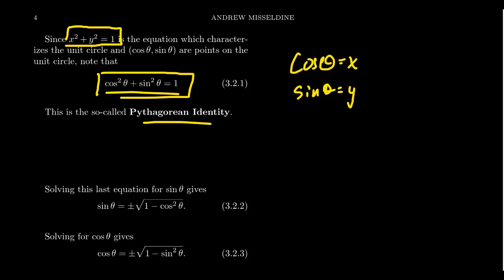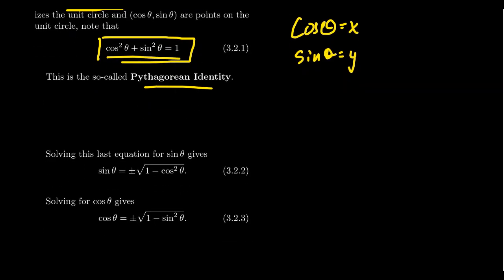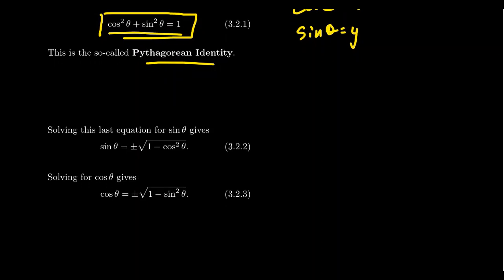Basically all the other trigonometric identities are essentially a child of this identity in some shape, way, or form. Every other trigonometric identity can essentially be derived from the Pythagorean identity. I want to show you a few others. These are also commonly referred to as Pythagorean identities because they're birthed from this mom identity pretty quickly.